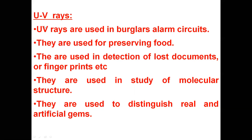Ultraviolet rays are used in burglar alarm circuits — for theft prevention in different offices. They are used for preserving food. They are used in detection of lost documents — very important. They are also used in fingerprint diagnosis, in the study of molecular structure, and to distinguish real and artificial gems.